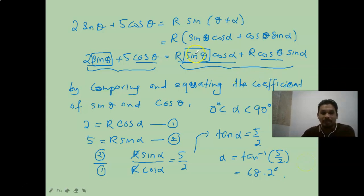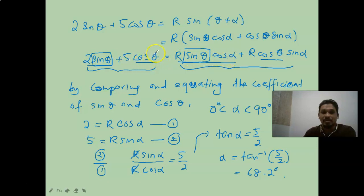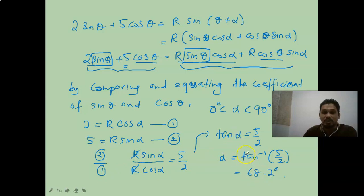To recap: from comparing sinθ terms we get 2 = R·cosα, and from comparing cosθ terms we get 5 = R·sinα. We list these down and divide equation 2 by equation 1: sine over cosine equals tangent alpha, so alpha = 68.2 degrees. Now we square and add equation 1 and equation 2 to find R.